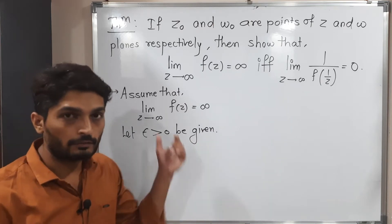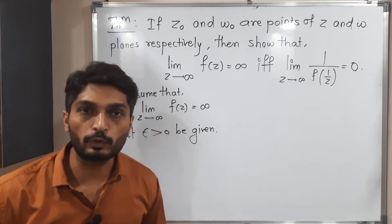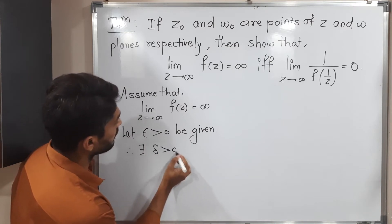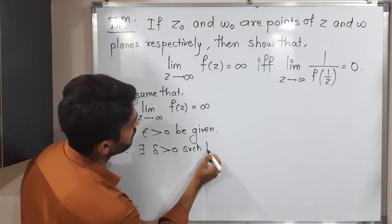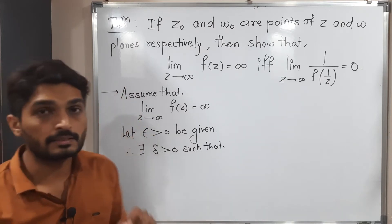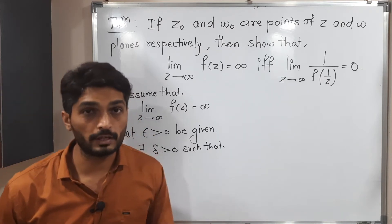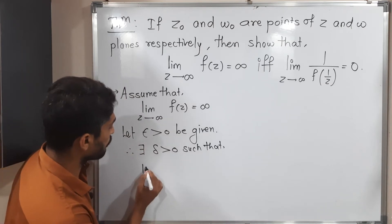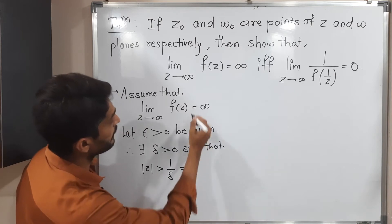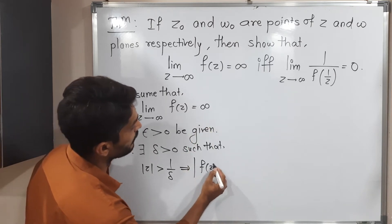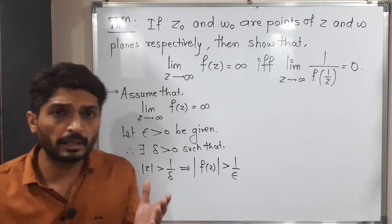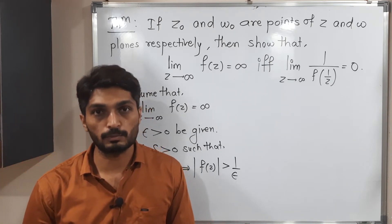By definition of limit, there exists delta greater than zero such that, since z approaches to infinity, we write mod z greater than 1 by delta. This implies f of z is greater than 1 upon epsilon, since both are approaching to infinity.